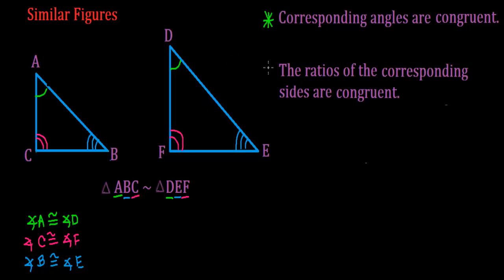Let's look at the second property. The second property says that if two figures are similar, the ratios — and this word is important, anytime you see this word think fraction — the ratios of the corresponding sides are congruent. Now we're not looking at the angles like before; now we're looking at the sides. And the ratios of the corresponding sides are equal.